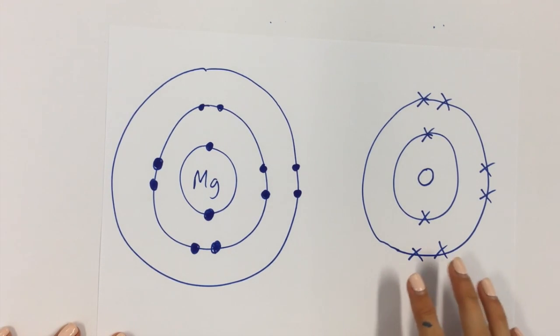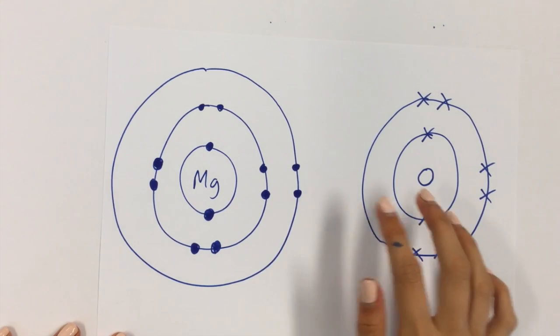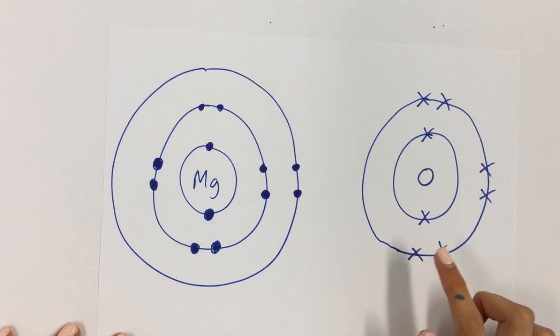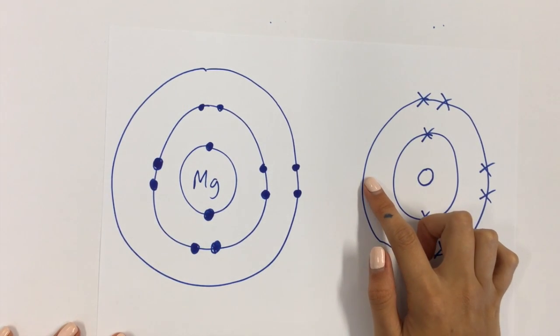Now, remember that what these guys are aiming for is that noble gas configuration. They're aiming to have full outer shells. Whereas before, in the sodium chloride example, I could transfer 1 electron from my sodium to my chlorine, and that solved all the problems.